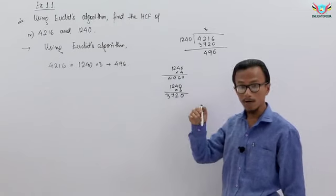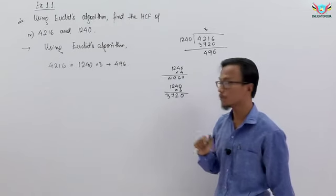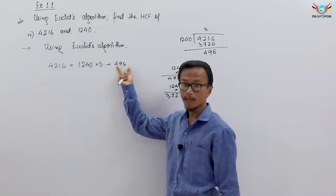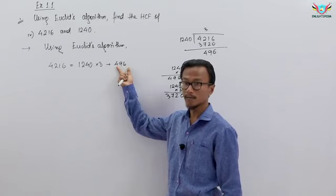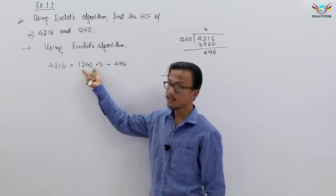Remainder 0 is not there, so we have to check it again. If remainder 0, then the HCF will be the divisor. When the divisor comes to the divisor, your remainder is 496.